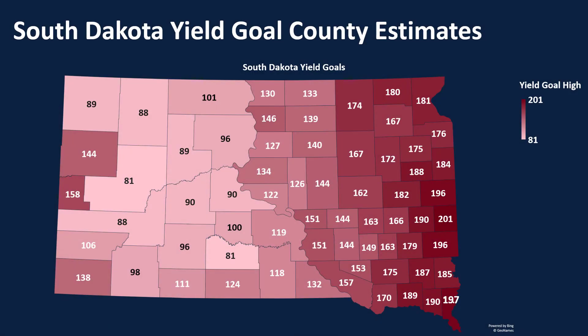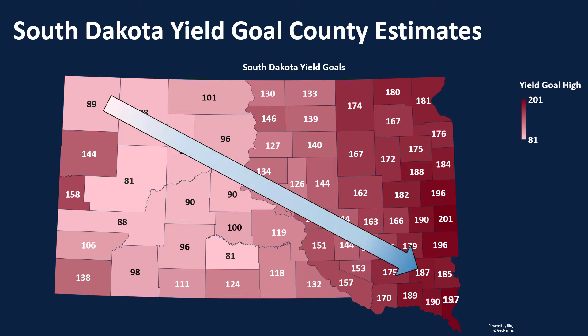If we look at our yield goal estimates for South Dakota we see a trend going from our northwest to southeast portion of the state, which also follows our precipitation pattern. Largely in South Dakota our yield potential is limited by rainfall, which is why having that in our consideration when we're determining our yield potential is very important.